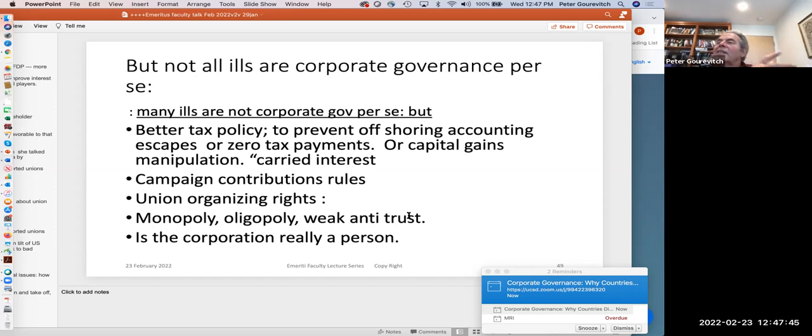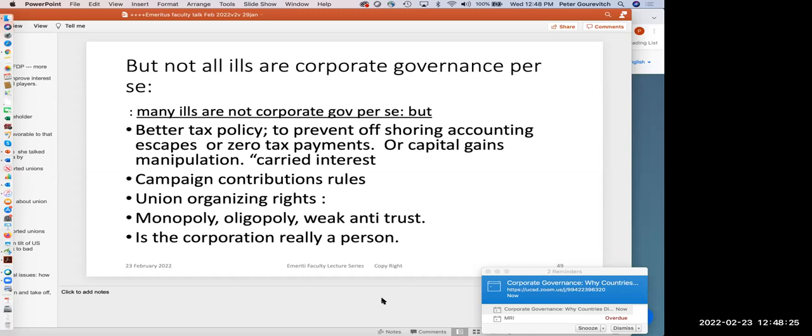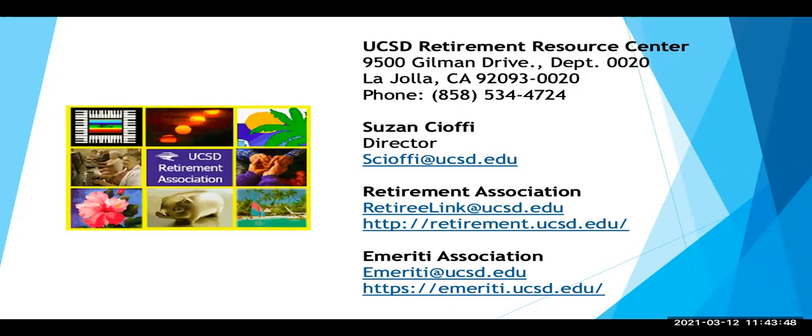My final slide is there are not all the ills that we see in corporations have to do with corporate governance. A lot of ills have to do with tax policy, offshoring or carried interest forward, capital gains or campaign contributions, bad policy on monopolies and oligopolies and a whole series of things. But that is my take, that is my spectacular take on the importance of corporate governance as an important dimension in how market economies differ from each other.